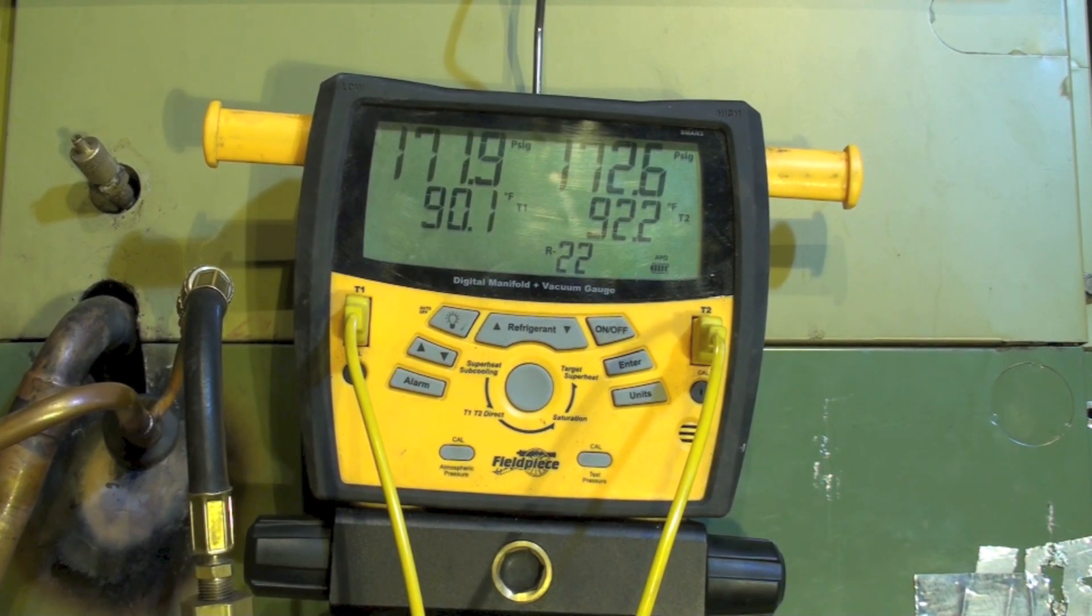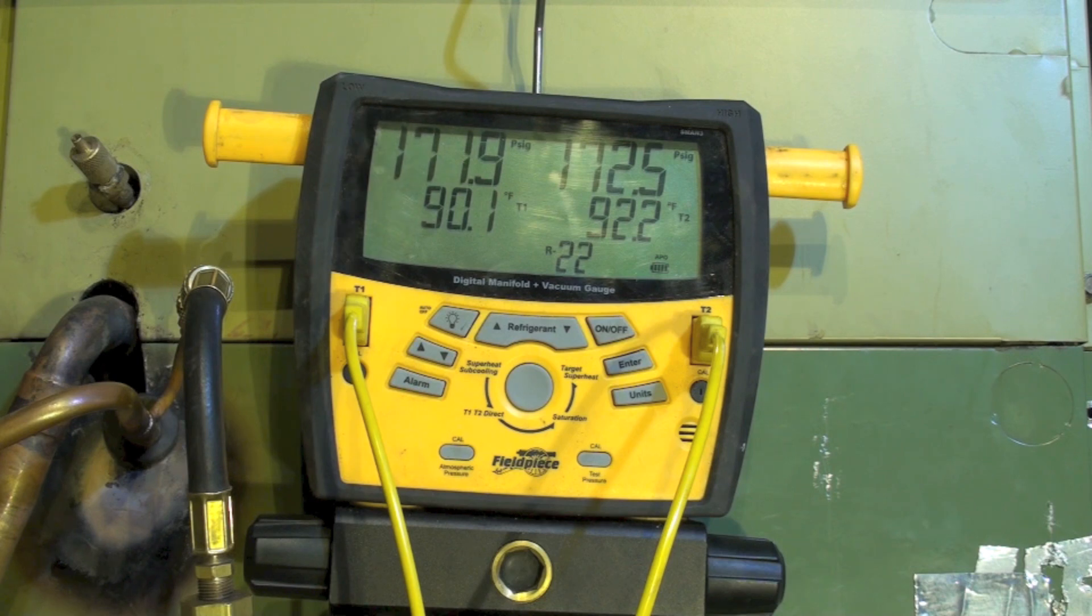Okay, I've been asked to do a pump down on this thing. It doesn't have the valves for a pump down, but I can shut off the suction line valve because I do have a suction line valve and I have a common suction, so I can see how much of a vacuum the compressor will pull. I'm going to go ahead and do that now.